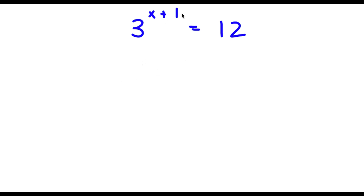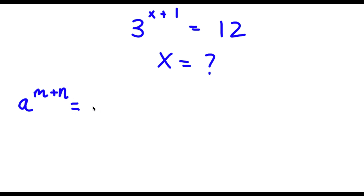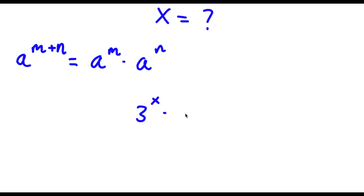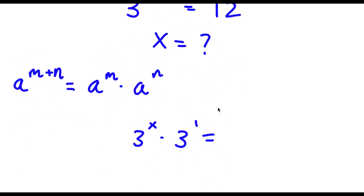Alright, so I have 3 to the power of x plus 1 is equal to 12. I want to find the value of x. If I have something in the form a to the power of m plus n, this is equal to a to the power of m times a to the power of n. So 3 to the power of x plus 1 equals 3 to the power of x times 3 to the power of 1, and this is equal to 12.